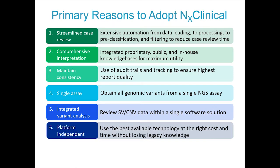Point number six is platform independence, which is very crucial. When we started, people were doing this work on BAC arrays, then moved to aCGH, to SNP arrays, and now NGS. The customer can use the best available technology at the right cost without losing legacy data or experience. As opposed to moving from one software bundled with aCGH to another with SNP arrays to another with NGS, it all resides within one database and one software — that has been a key feature of our products from the beginning.